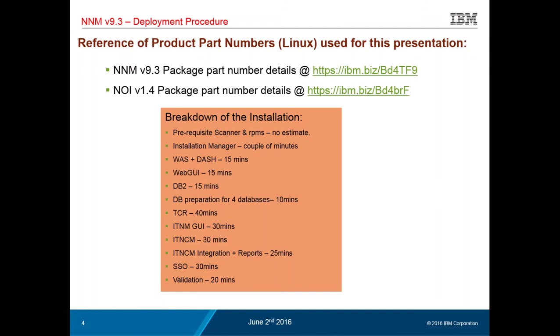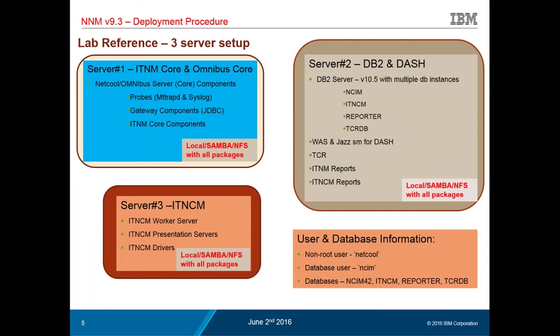The installation breakdown shows the key part is the prerequisite scanner — how long that takes varies by customer, as some have admin rights to install RPMs while others must raise tickets with other teams. Assuming prerequisites are met, the rest of the installation should not take more than four hours, as long as you follow the instructions in the right order. This setup was done in a lab on three servers as a standalone, non-highly-available deployment. You could deploy on four servers, one server, or two, based on available hardware resources.